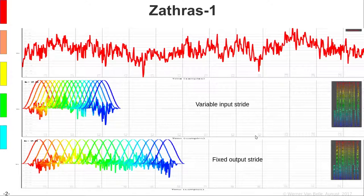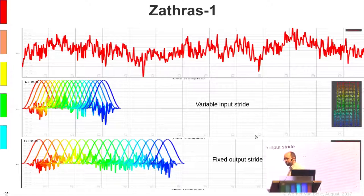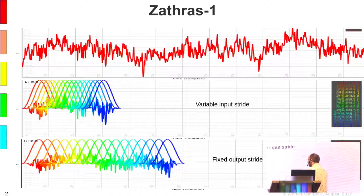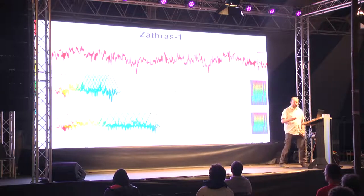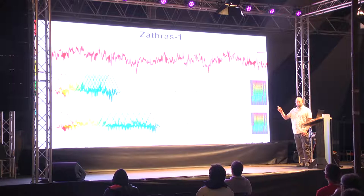The time stretcher is based around the sliding window Fourier transform, which means it will take overlapping segments from the input sound, analyze them, re-synthesize them, and place them in the output stream. The amount of time stretch depends on the spacing between the input segments and the output segments.